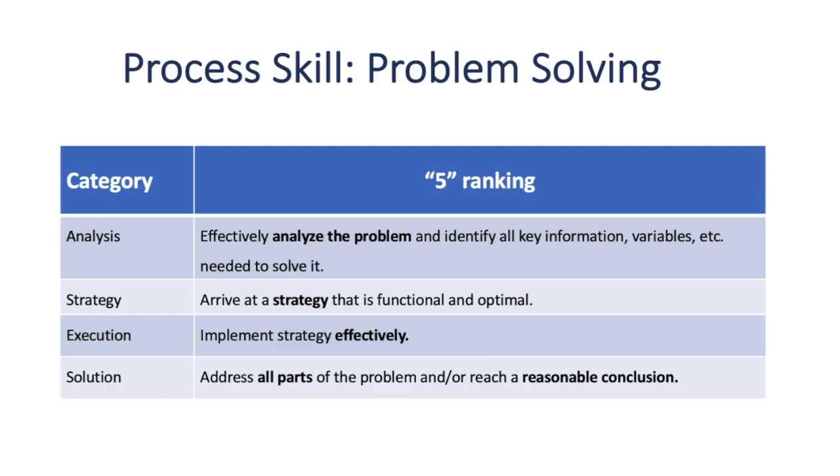And there are four parts to problem-solving. Analyzing a problem to identify what information is needed, what information we have. Arriving at a strategy that is functional and optimal. And this is one where I think you may notice, in retrospect, when you get to the end, maybe your strategy worked, but it wasn't the best strategy, and there could have been a different way to go about it. So pay attention to that as you're sort of self-evaluating at the end of today. Executing the strategy, implementing it effectively, and then arriving at a solution that's reasonable and addresses all parts of the problem.